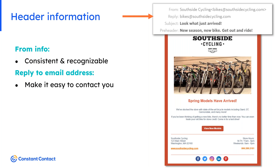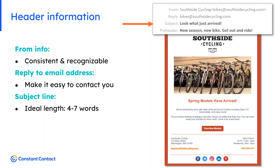The reply-to email address is typically the same as the from address — just make sure someone monitors it for replies. The from and reply email addresses are set once in your reusable master template. However, you will need to change the subject line and pre-header text with every email. Four to seven words is the ideal length for a subject line. The pre-header displays below the subject line — use five to eight words as an extension to further grab the reader's attention.